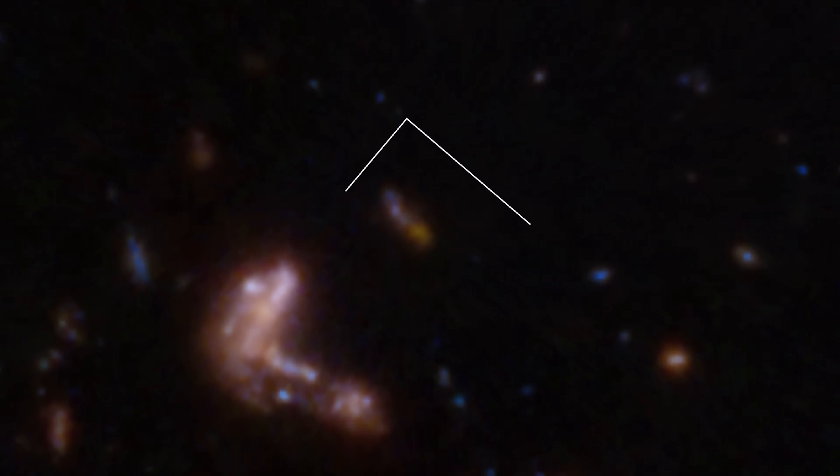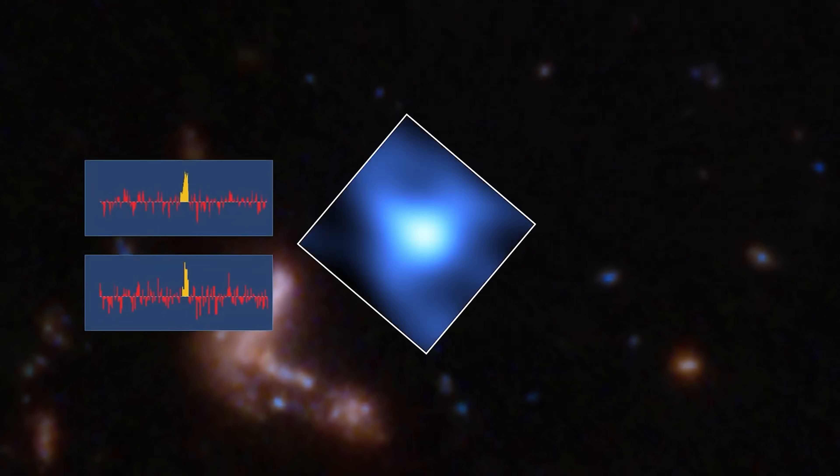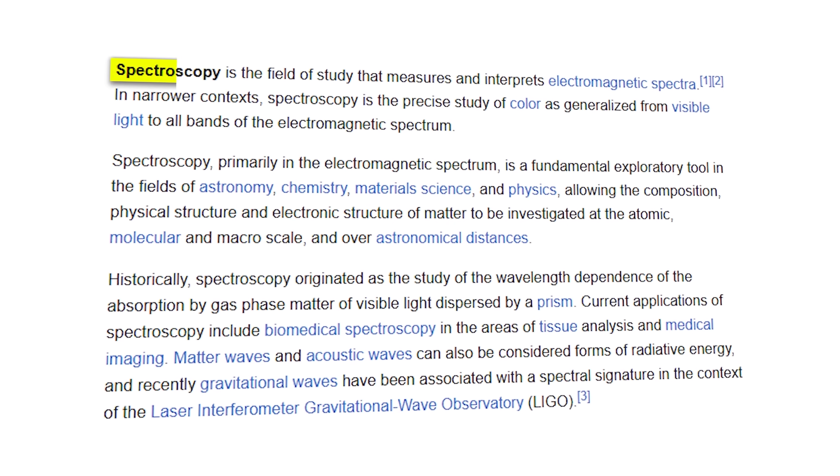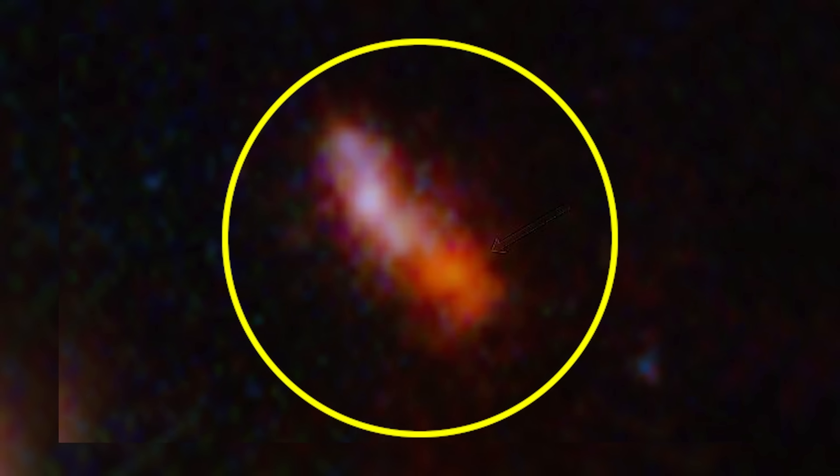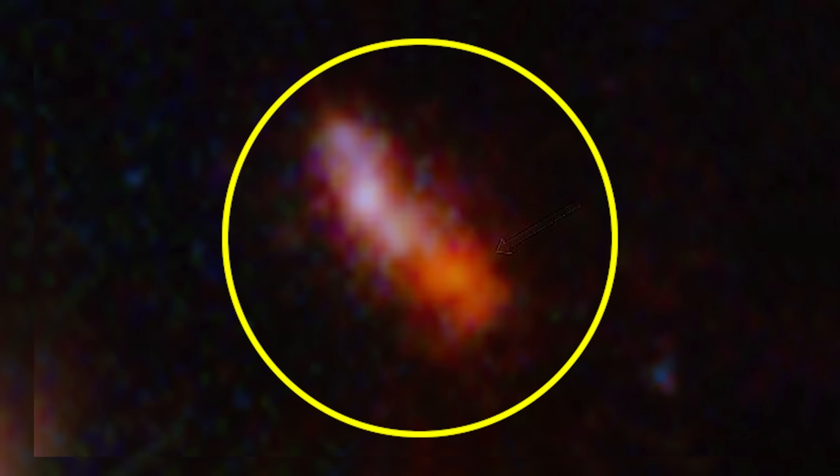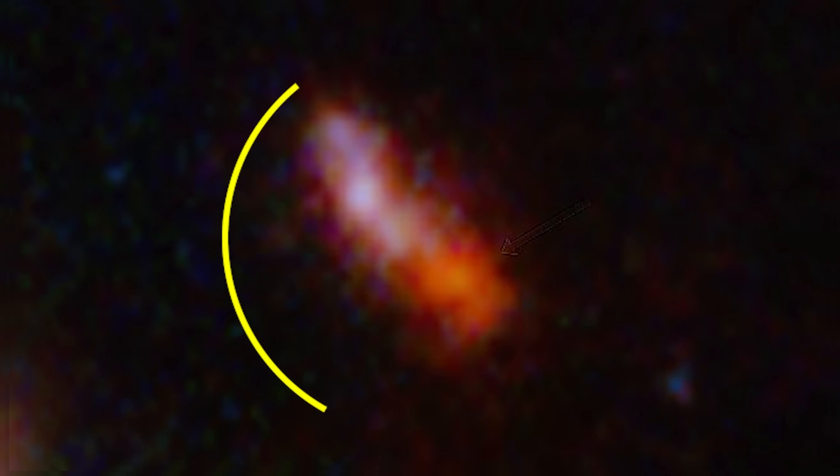Initially, observers speculated that such luminosity indicated a relatively close distance. However, upon further investigation, including detailed spectroscopy, it became clear that this yellow blob is, in fact, the most distant galaxy ever observed.